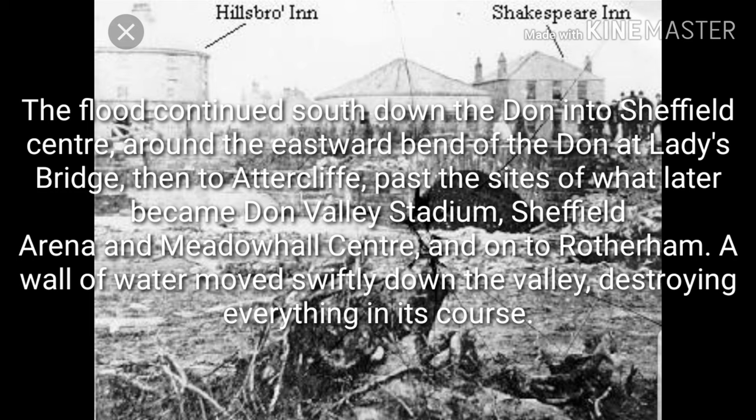The flood continued south down the Don, into Sheffield Centre, around the eastward bend of the Don at Ladies Bridge, then to Attercliffe, past the sites of what later became Don Valley Stadium, Sheffield Arena and Meadow Hall Centre, and onto Rotherham. A wall of water moved swiftly down the valley, destroying everything in its course.